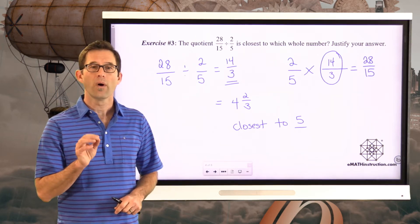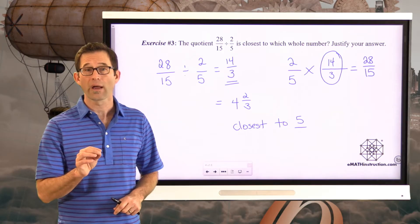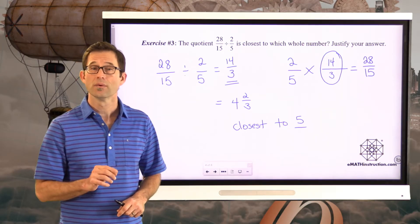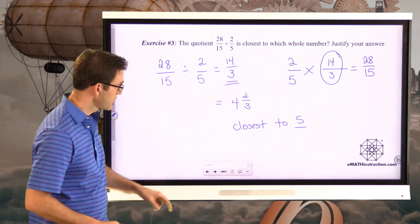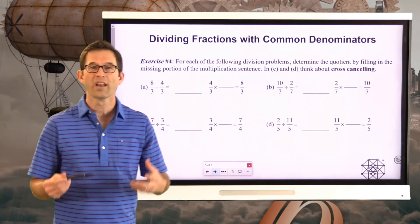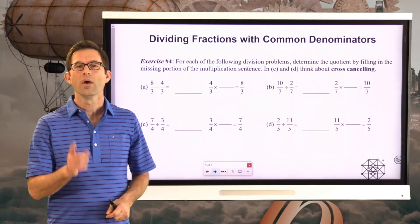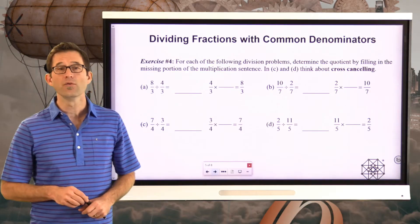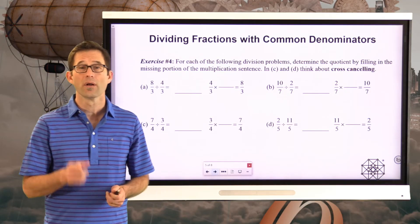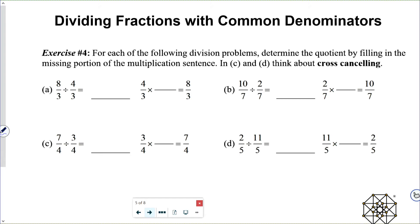In the next set of exercises, we're going to look at a very peculiar case: what happens when we divide two fractions that have the same denominators? Dividing fractions with common denominators — I thought that was only for adding and subtracting fractions! There's a very special thing that happens when you divide two fractions with the same denominator. For each of the following division problems, determine the quotient by filling in the missing portion of the multiplication sentence. In C and D, think about cross-canceling.